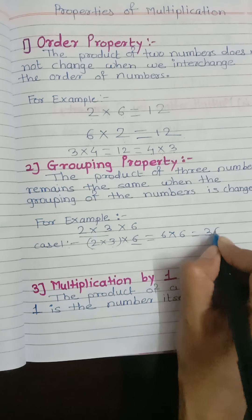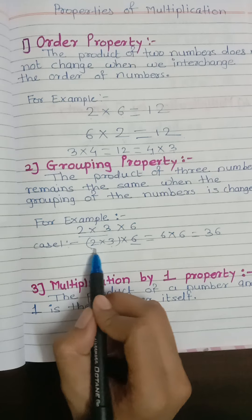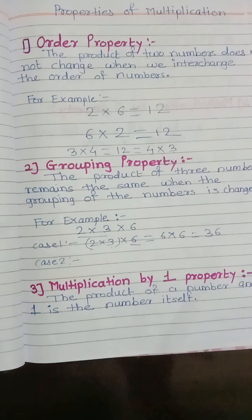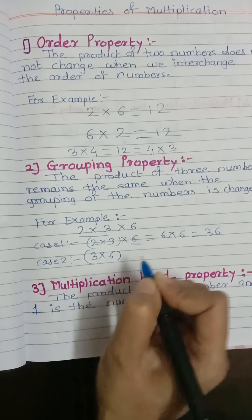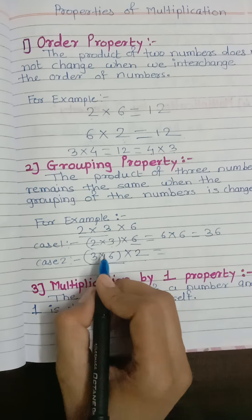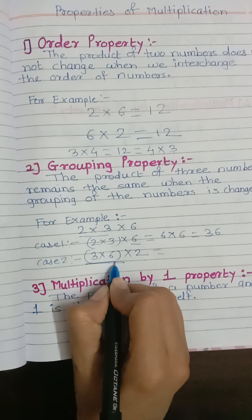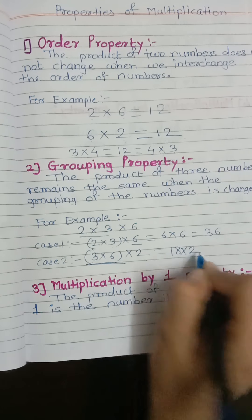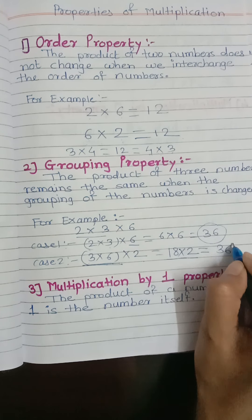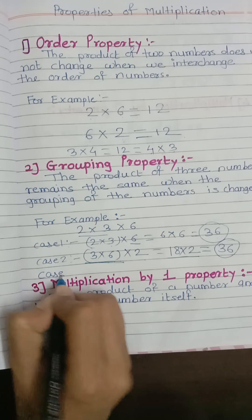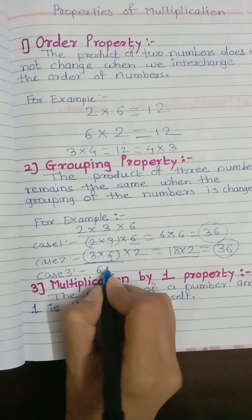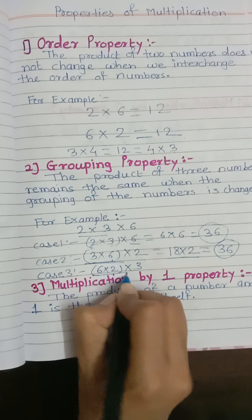Case 1: We group 2 and 3 together. 2 multiplied by 3 is 6, then 6 multiplied by 6 is 36. Case 2: We group 3 and 6 together. 3 multiplied by 6 is 18, and 18 multiplied by 2 is 36. So in both cases the answer is 36.